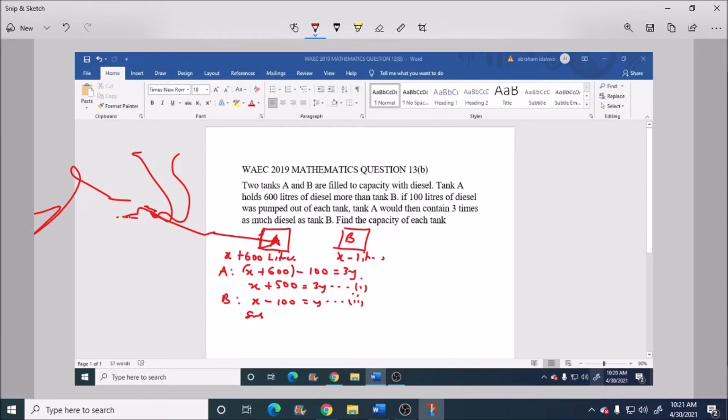we have X plus 500 equals to 3 into X minus 100. This will give us X plus 500 equals to 3X minus 300. So here we have 500 plus 300 equal to 3X minus X. So we have 800 equals to 2X.